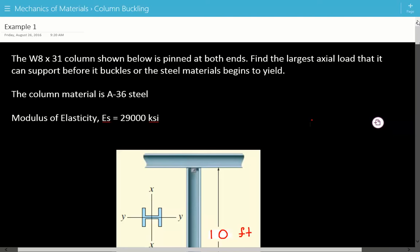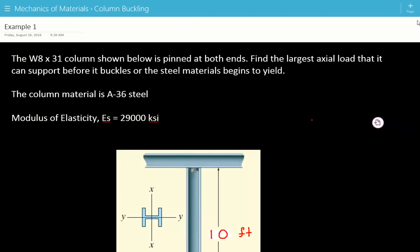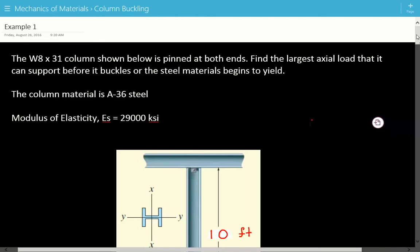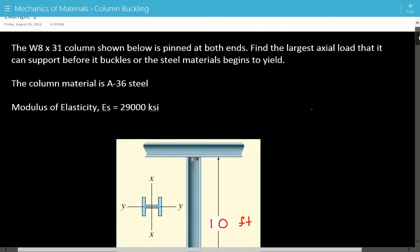Hey everybody, this is example number one for mechanics of materials covering column buckling. The W8 by 31 column shown below is pinned at both ends. We need to find the largest axial load that it can support before it buckles or the steel material begins to yield. The column material is A36 steel, so the yield stress is equal to 36 ksi.